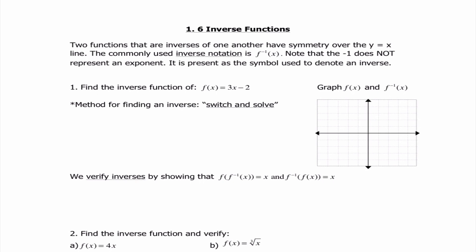Probably the biggest change from Algebra 2 is I want to spend a little more time talking about what the graphs of functions look like. Two functions that are inverses of one another have symmetry over the y equals x line. Our notation uses f inverse of x, written with a negative one that looks like an exponent — but please note it is not an exponent. It is just a symbol denoting an inverse.